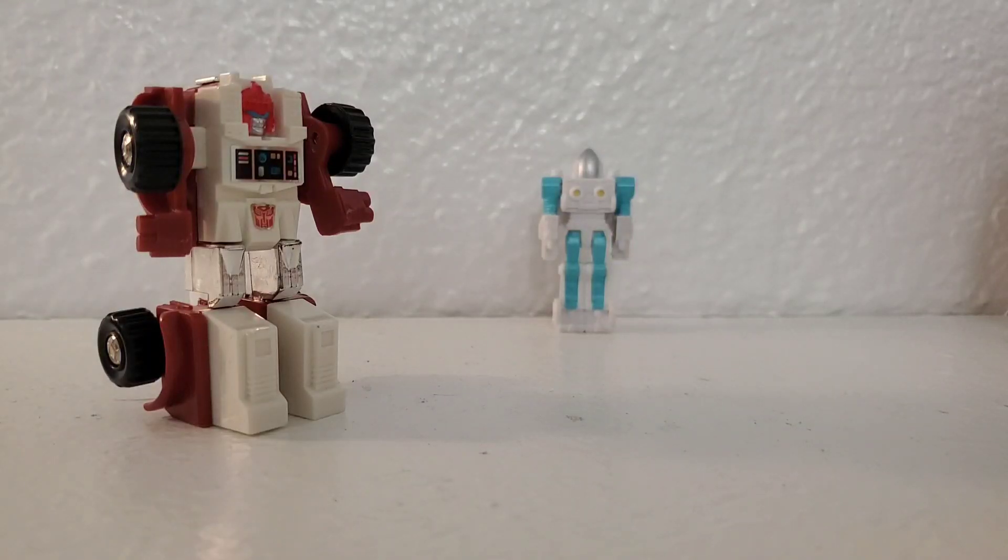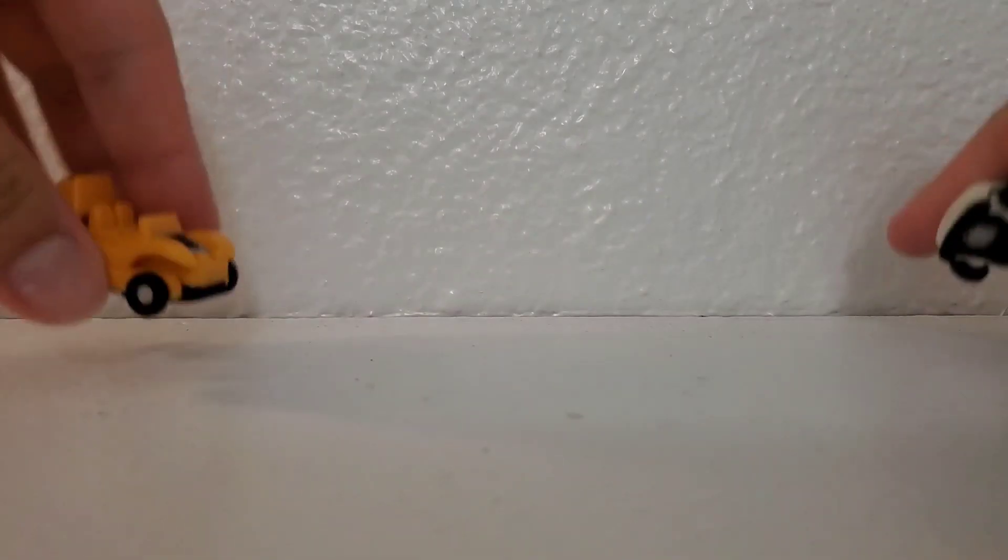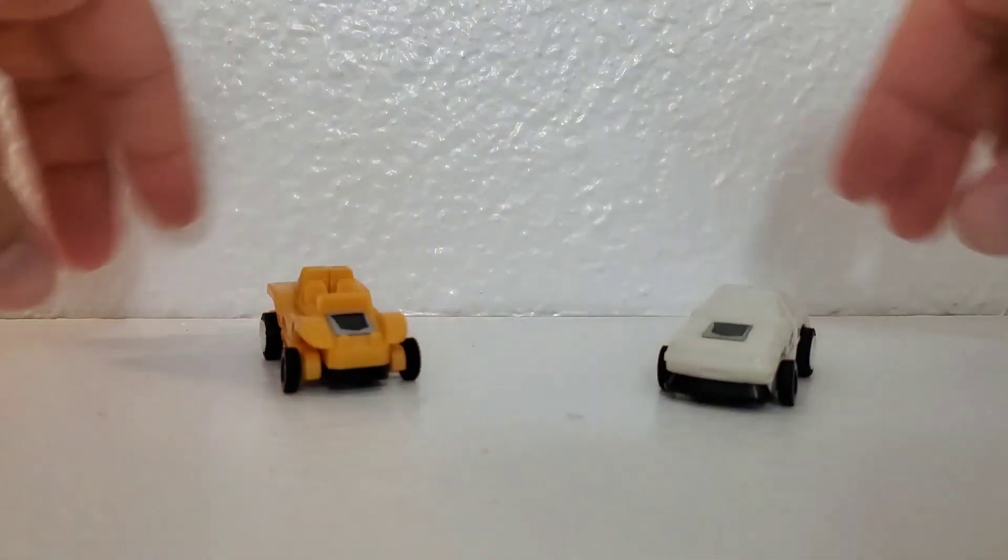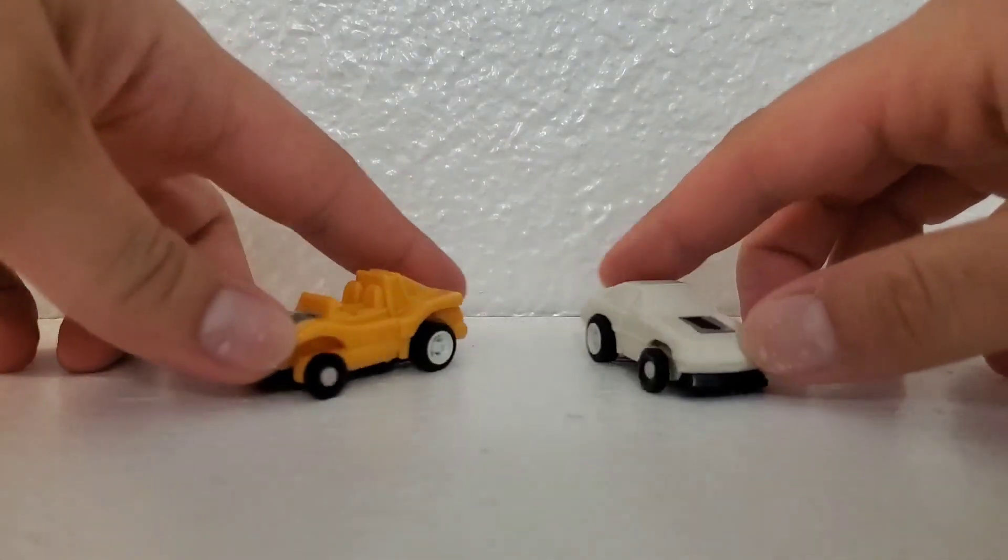In the world of the Transformers, it used to be easy to spot the difference between a Decepticon and an Autobot. But now the mini-spies are on the loose. They look like Autobots, but are they?